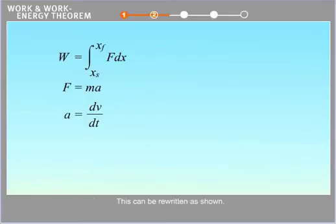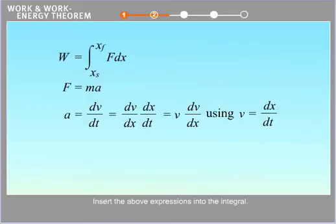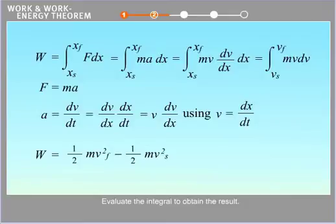This can be rewritten as shown. Next, use the definition of velocity. Insert the above expressions into the integral. The factors dx cancel. Evaluate the integral to obtain the result. V sub s is the initial velocity and v sub f is the final velocity.